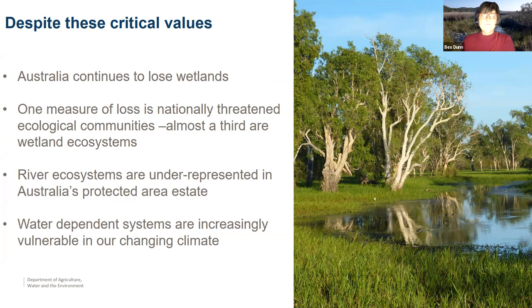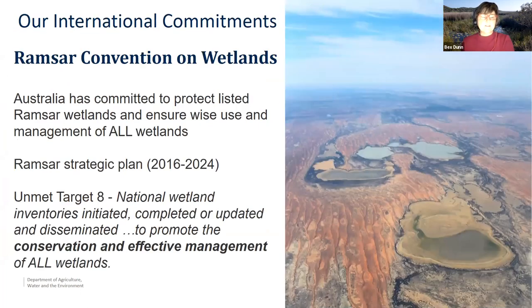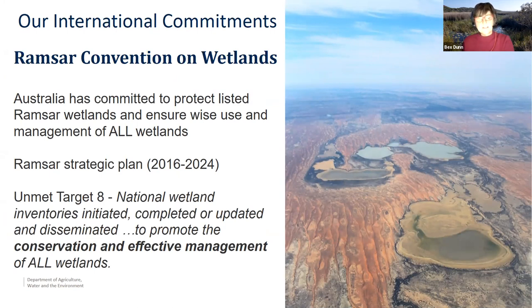So what have we committed in Australia to do about wetlands? As Alicia pointed out, we were actually the first country to ratify the convention and listed the first wetland site in 1974. And we've committed to protect listed wetlands — we've got 66 of those, although that hasn't changed much in the last 20 years. But we've also committed to actually look after all wetlands. And the Ramsar strategic plan provides that framework for what we should be doing to protect those wetlands. And we've got this unmet target because we haven't got a national wetland inventory.